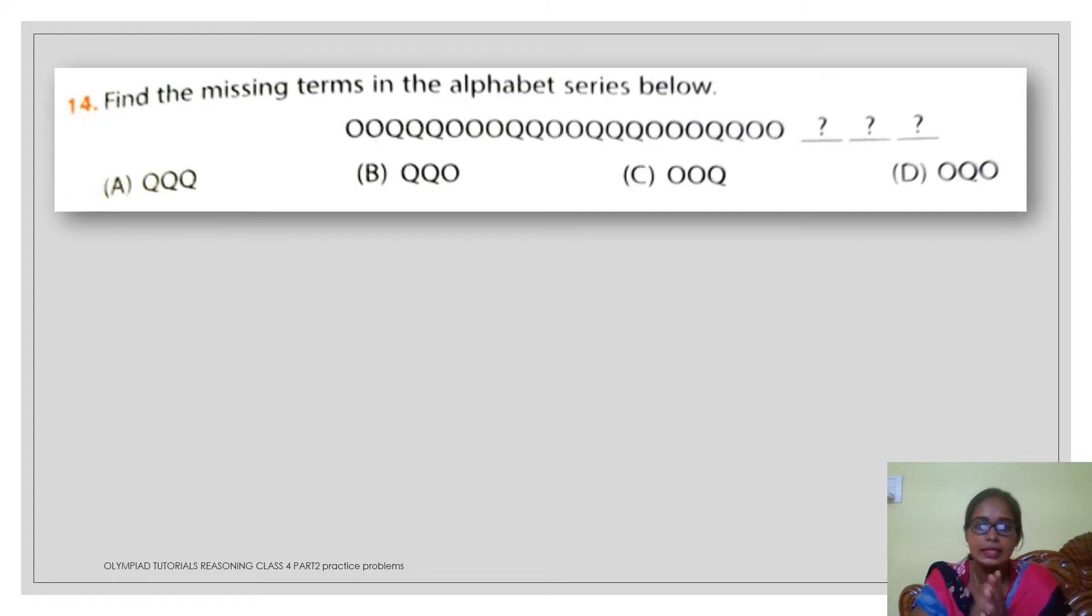Here you can see a sequence of alphabetic series of O and Q. You have to just observe it carefully that how many times the alphabets are being repeated. Here you have the repetition of O two times. Here Q is repeated three times. Again here O is repeated three times. Q is repeated two times. Here you have O repeated two times. Q three times. O again three times. Q two times.